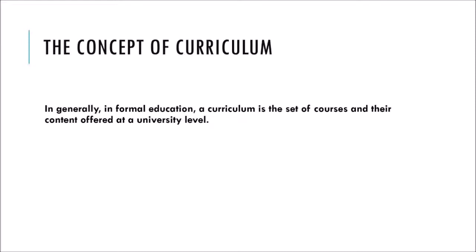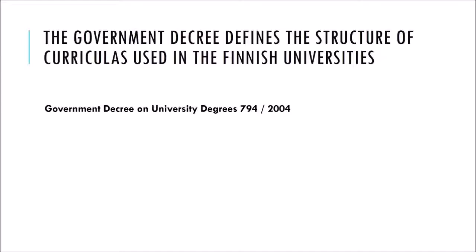In general, in formal education, a curriculum is the set of courses and their content offered at the university level. In Finnish universities, the government degree on university degrees and specialization studies defines the objectives, extent and overall structure of degrees. The universities decide on the detailed contents and structure of the degrees they award. They also decide on their curricula and forms of instruction. According to the degree, the university must arrange teaching and study guidance so as to enable full-time students to gain their degrees in the normative time.